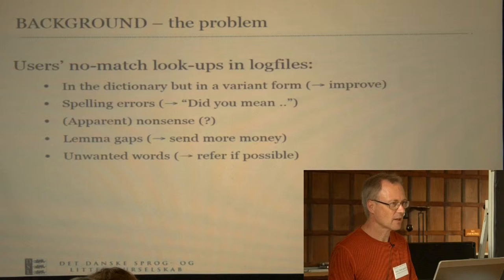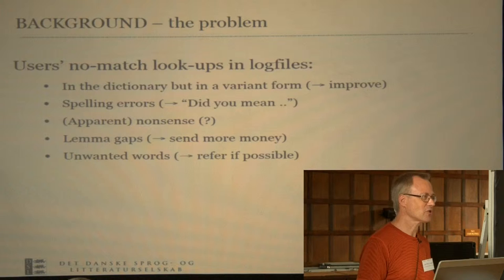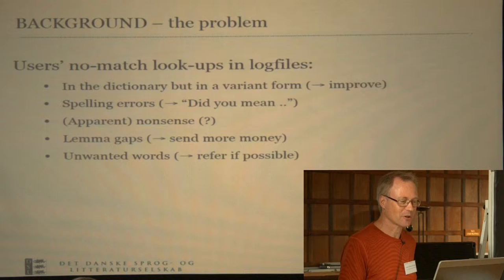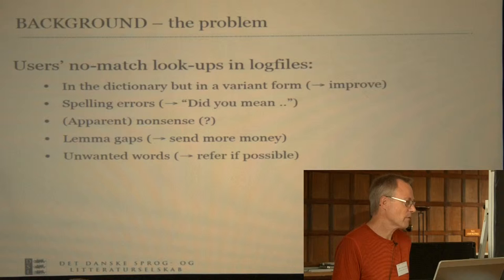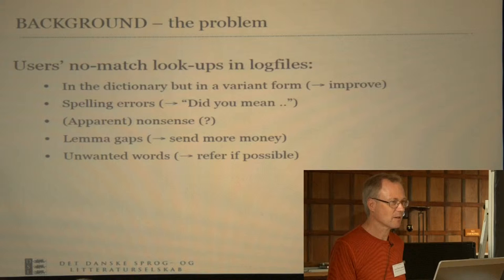The third type is perhaps the hardest — I call it 'nonsense.' When I say apparent nonsense, it's because it seems like nonsense to us but may not be to the user. We don't really have a solution to that. Then there are lemma gaps — words that should perhaps be in the dictionary but we haven't included them so far — and the solution is obviously to spend more time and money making the dictionary entries.